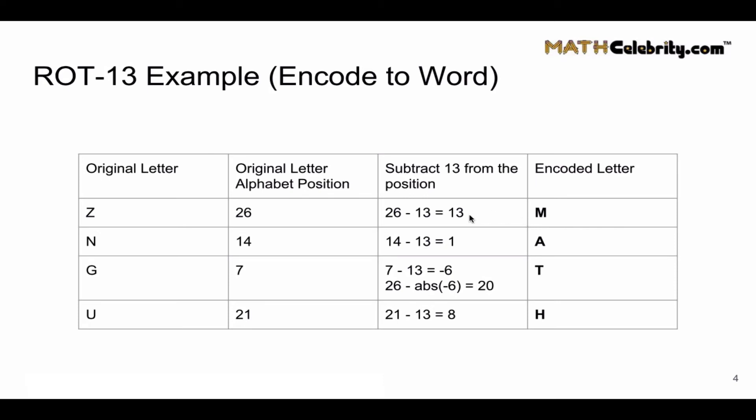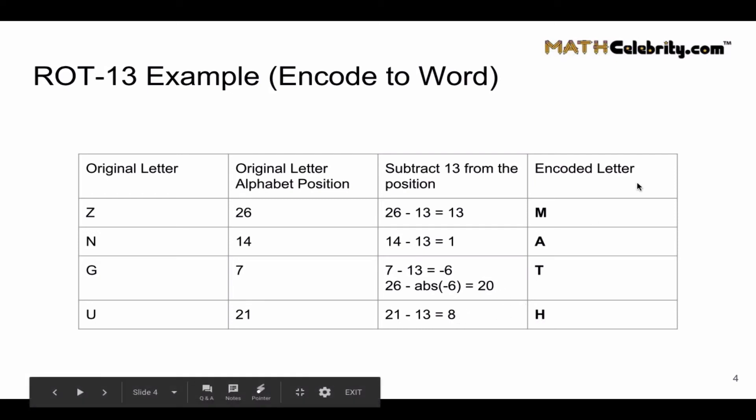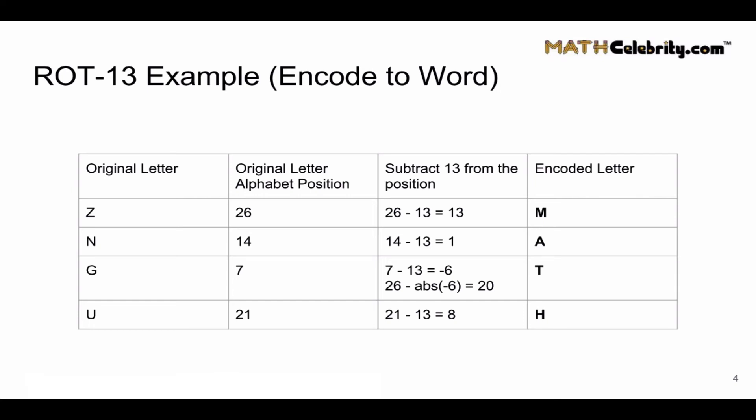So M is the 13th letter in the alphabet, A is the 1st, T is the 20th, and H is the 8th letter in the alphabet. So this is how we decrypt. Your friendly formula is add 13 to encrypt and subtract 13 to decrypt.